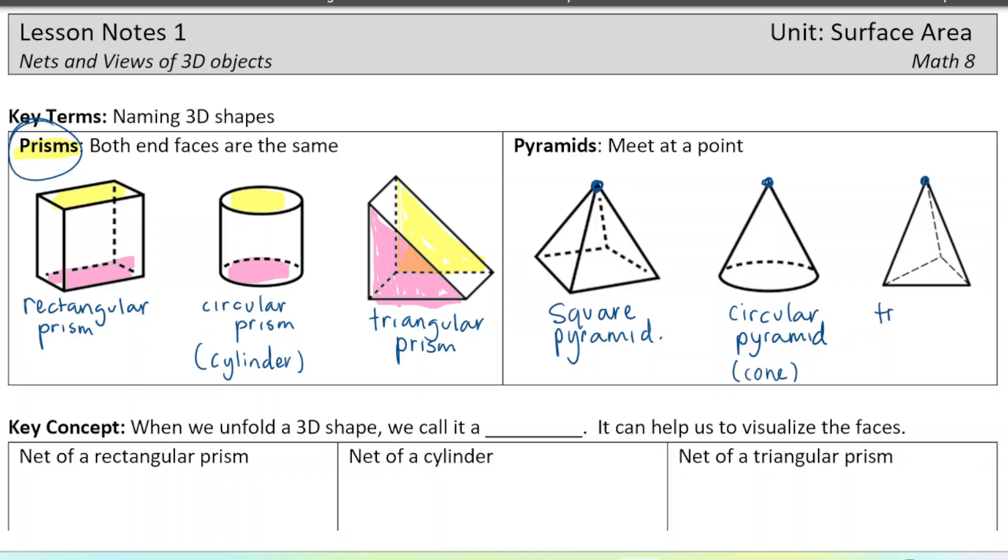And then this one is a triangular pyramid. They're named just based on whatever shape is on the base of the pyramid. So that would be a square, circle, and triangle. Okay. So again, most of the time we're going to be working with prisms, but it's also good to know what pyramids are as well.